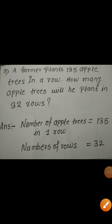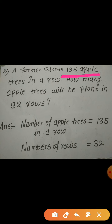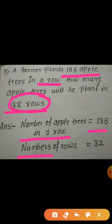Students, I am going to discuss question number 3 of exercise 3.6. The question is: a farmer plants 135 apple trees in a row. How many apple trees will he plant in 32 rows? It is given that there are 135 apple trees in one row, and we are asked to find the total number of apple trees in 32 rows.